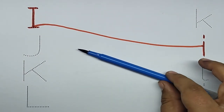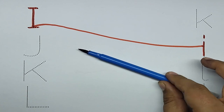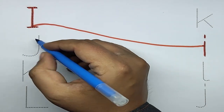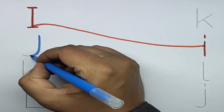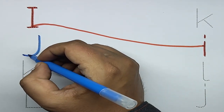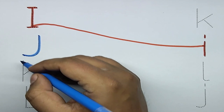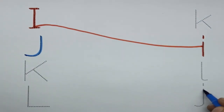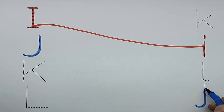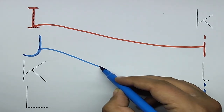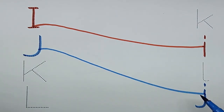Blue color. Capital J, J for Jeep. Small j, J for jar. Let's match J.